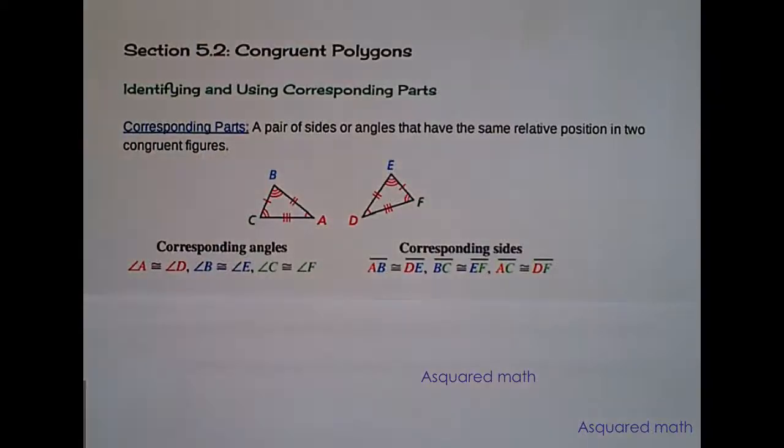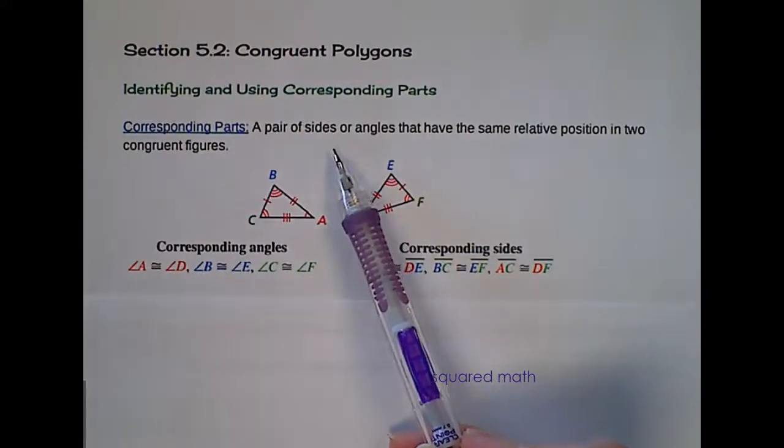Hello everyone and welcome to section 5.2 on congruent polygons. In this lesson we're going to identify and use corresponding parts. So what exactly is a corresponding part? It is a pair of sides or angles that have the same relative position in two congruent figures.